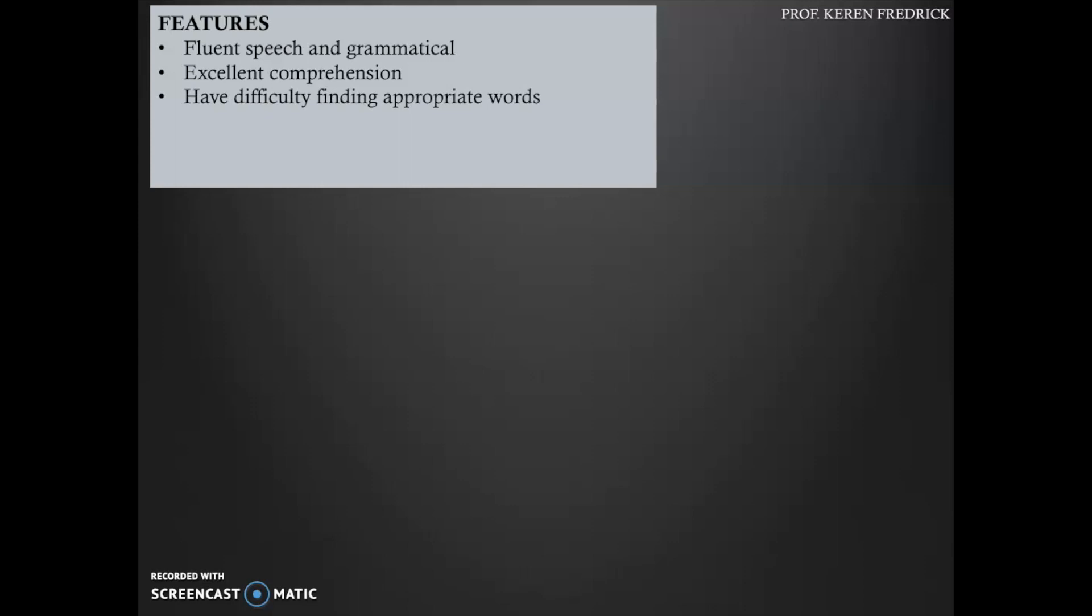This difficulty is compensated using a feature called circumlocutions. Basically, this is a strategy wherein the patient with anomia uses alternative ways to say what they want to communicate when they are unable to get the right word.